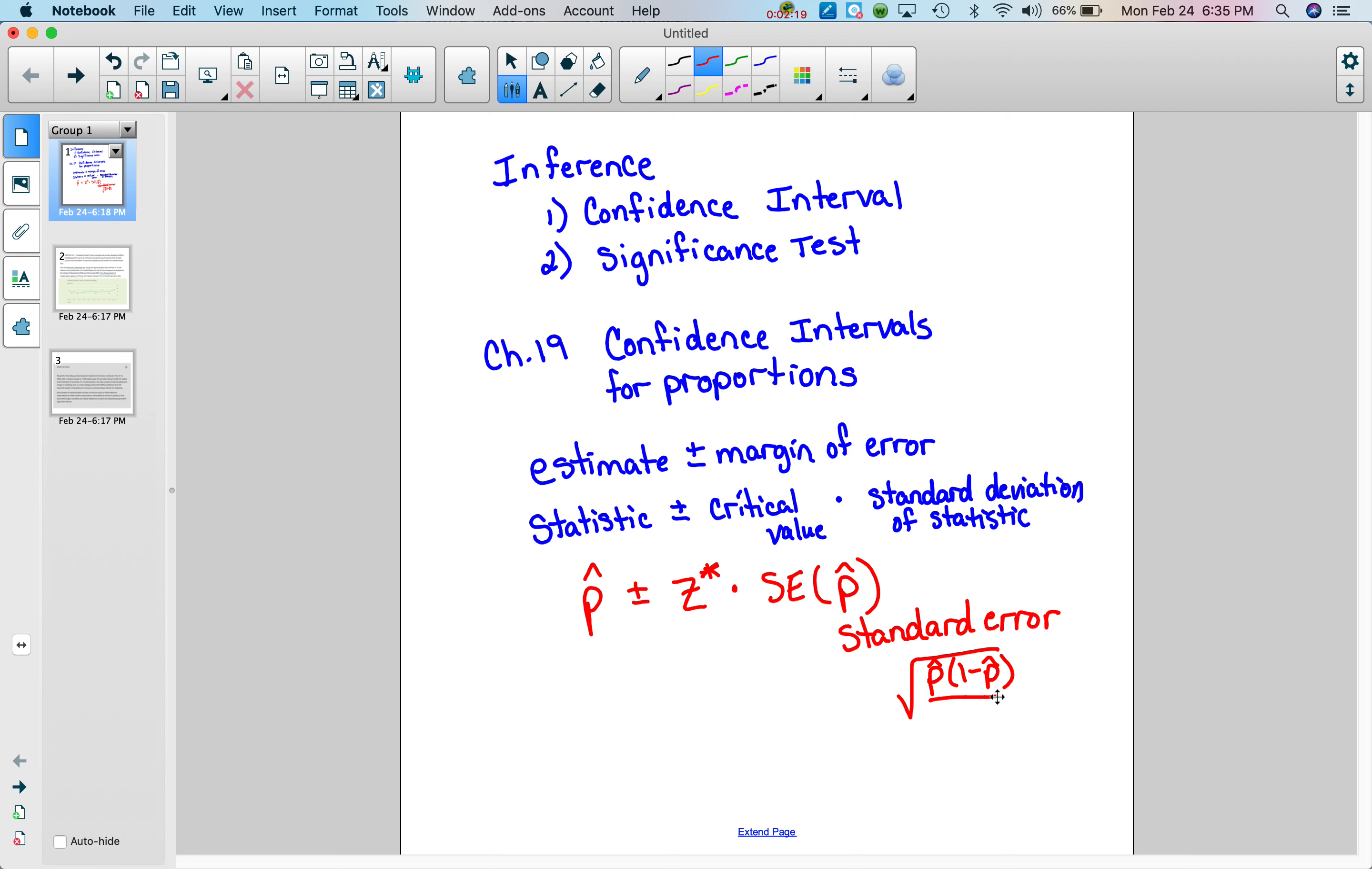Now this critical value depends on the confidence interval or confidence level. So for the confidence level, sometimes you'll hear something said where it's a 95% confidence level. If it's 95% confidence, then our z star value is 1.96.